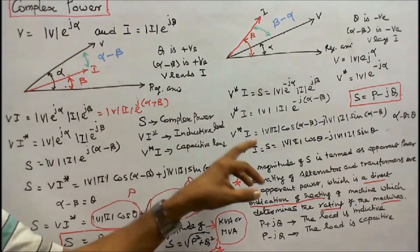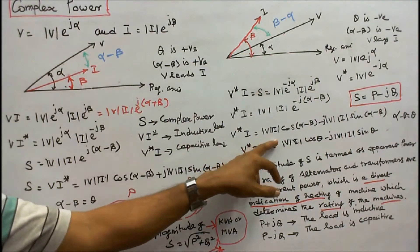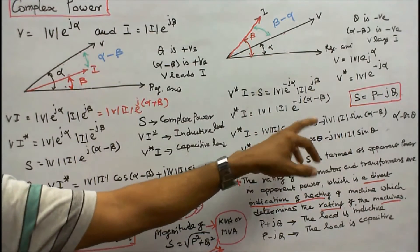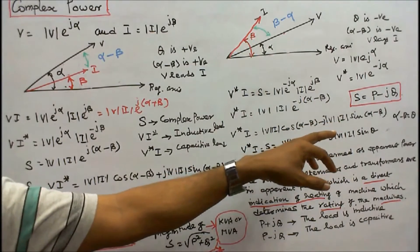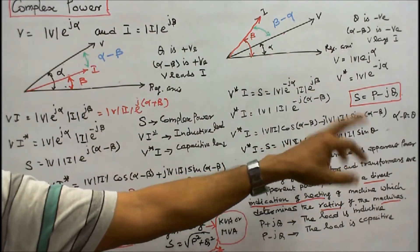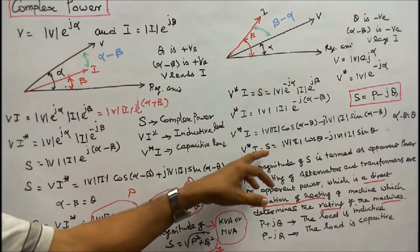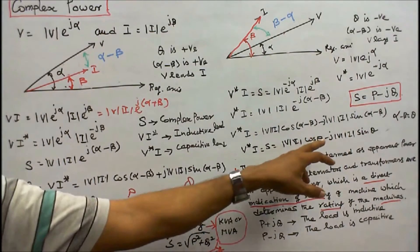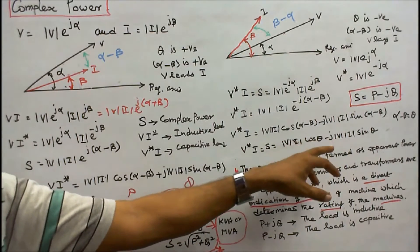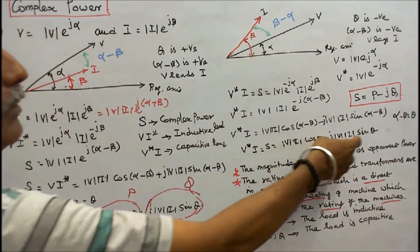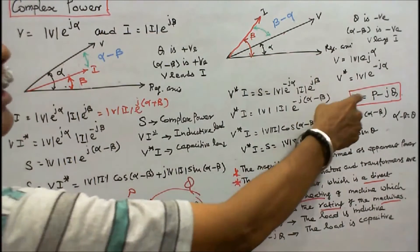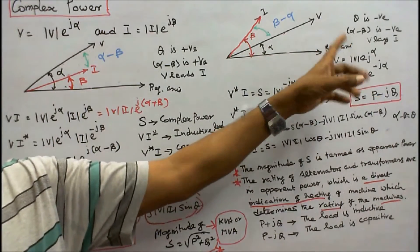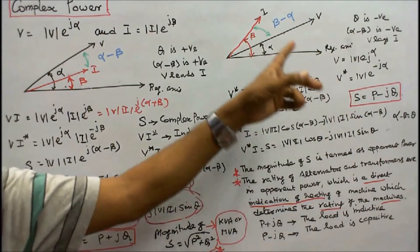Therefore, complex power S equals modulus of V times modulus of I times cos(alpha minus beta) minus j times modulus of V times modulus of I times sin(alpha minus beta). With alpha minus beta equal to theta, S equals modulus of V times modulus of I times cos theta minus j times modulus of V times modulus of I times sin theta. This term is P, this term is Q. Therefore S equals P minus jQ. Here, Q is negative when alpha minus beta is negative, meaning voltage lags current.